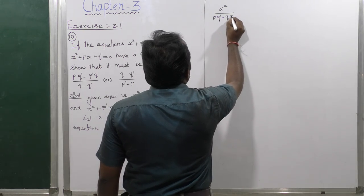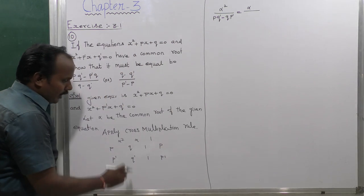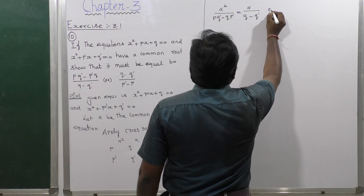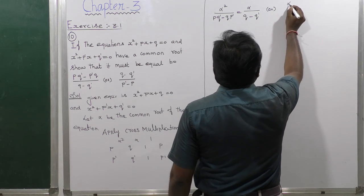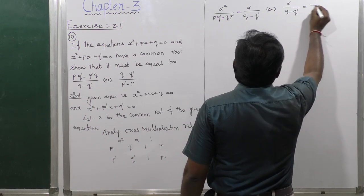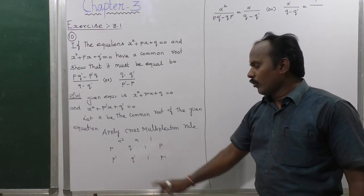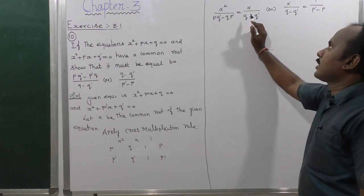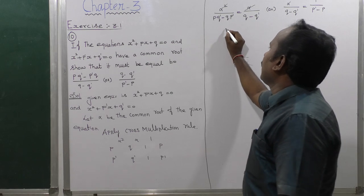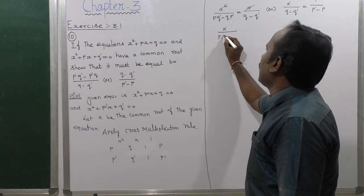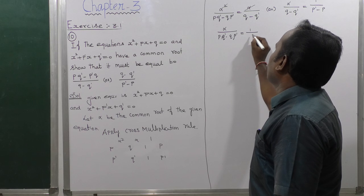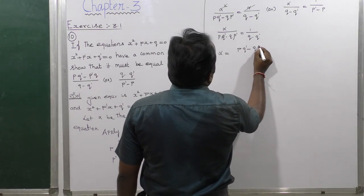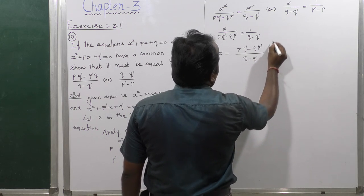So alpha² divided by (q - q') equals alpha divided by (p' - p), and the second part gives alpha divided by (q - q') equals 1 divided by (p' - p). Therefore alpha divided by (pq' - qp') equals 1 divided by (q - q'), so alpha equals (pq' - qp') / (q - q').